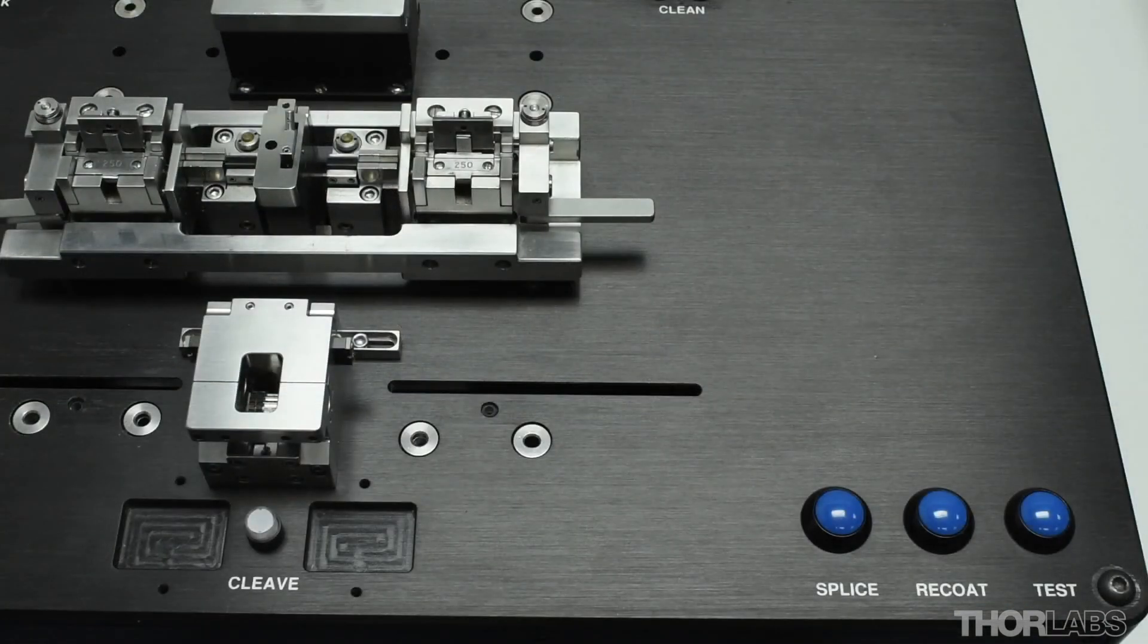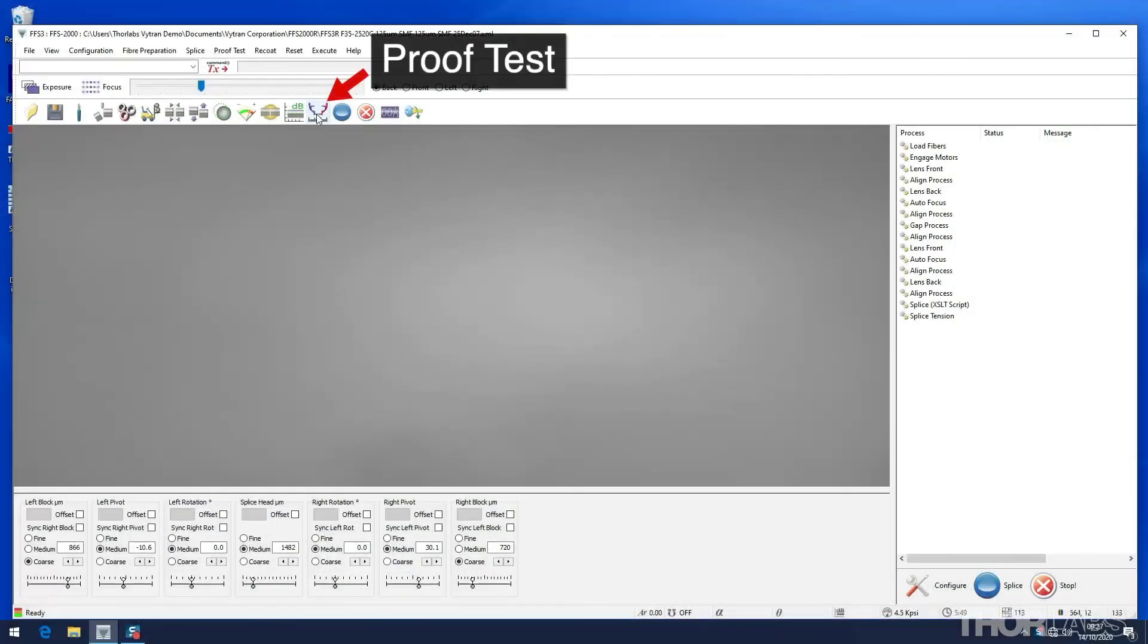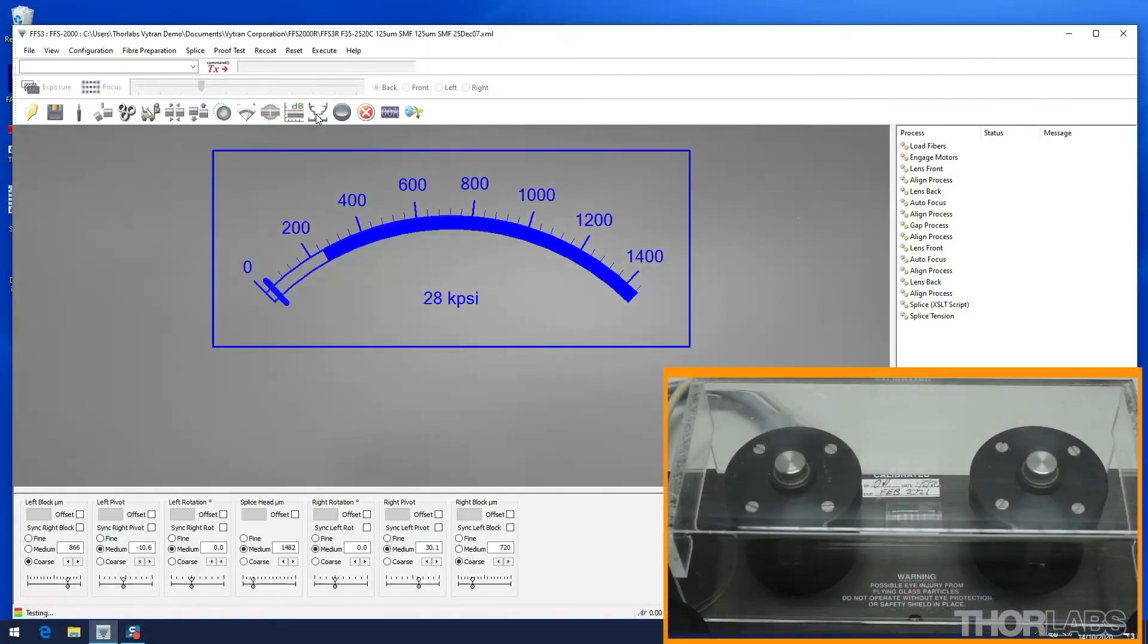To initiate a proof test, either press the test button on the unit or click the proof test icon in the software. The right hand mandrel starts to rotate and the proof tester's strain gauge monitors the force applied to the fibre and reports this to the software.